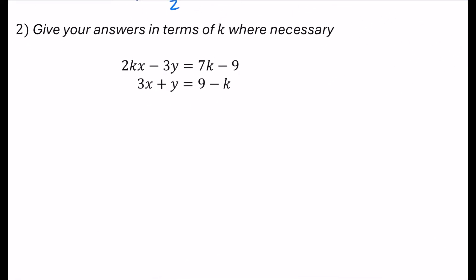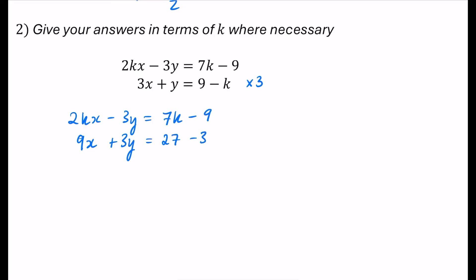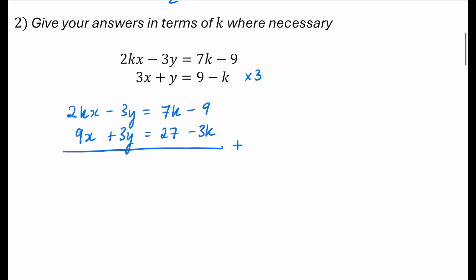The easiest way to eliminate something here is to take the second equation and multiply it by three, because then I would have a 3y. So I still have the first equation: 2kx minus 3y equals 7k minus 9. When I triple the next one, I get 9x plus 3y, and tripling the right-hand side too. Adding them together eliminates the 3y terms. So I get 2kx plus 9x, the 7k add minus 3k gives 4k, and 27 minus 9 gives 18.